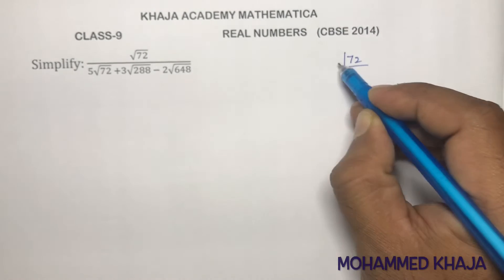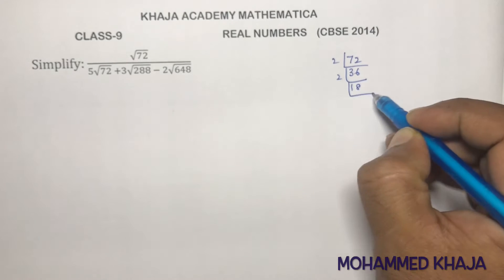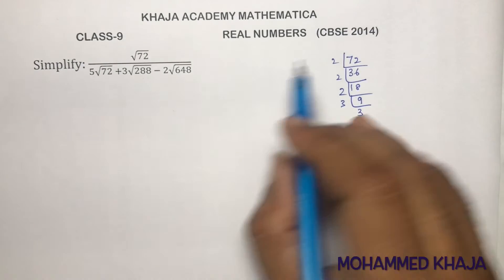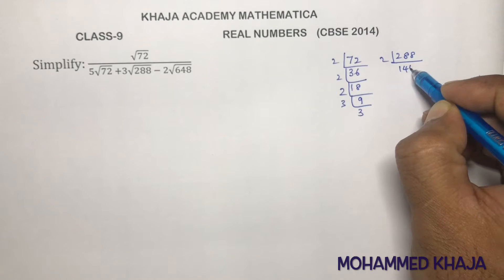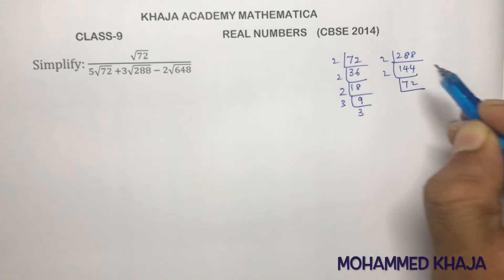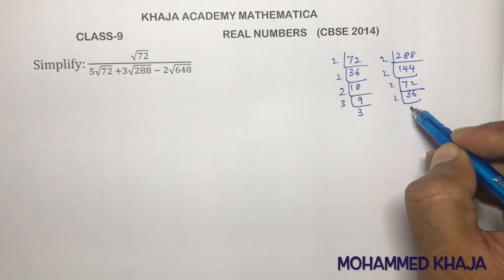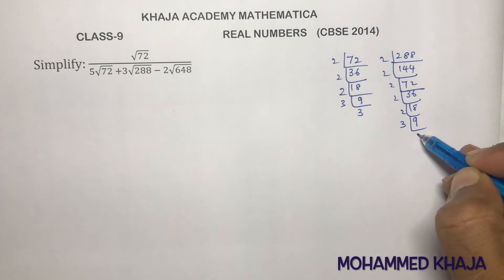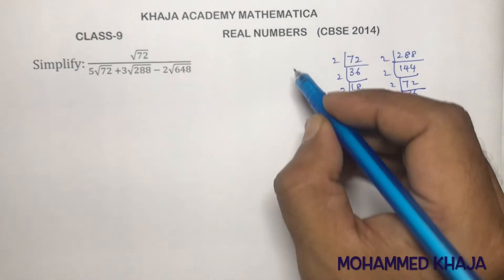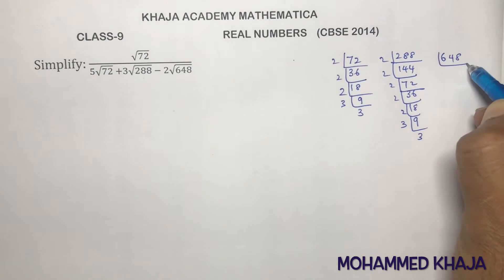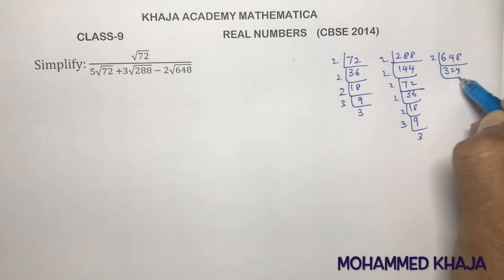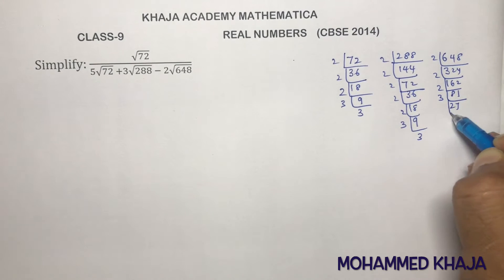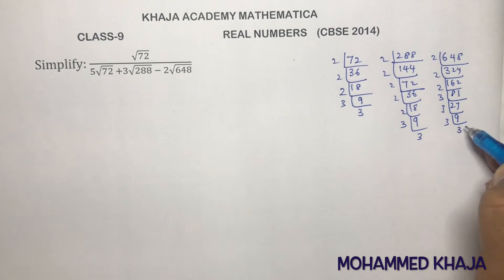For 72: 2 × 2 × 2 × 3 × 3. For 288: 2 × 144, 2 × 72, 2 × 36, 2 × 18, 2 × 9, 3 × 3. For 648: 2 × 324, then 2 × 2 × 2 × 3 × 3 × 3 × 3.